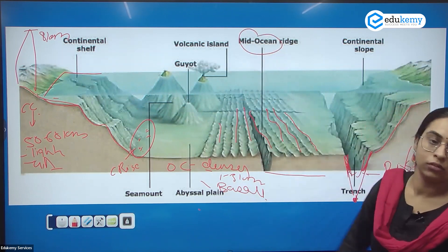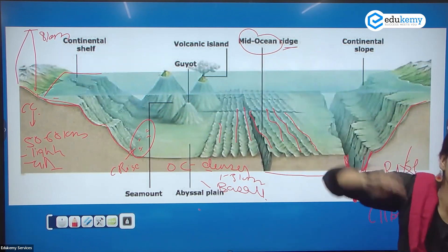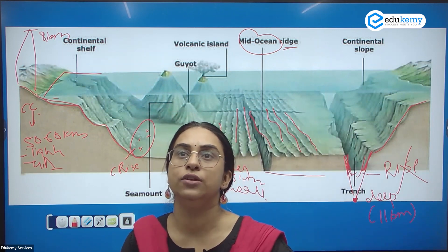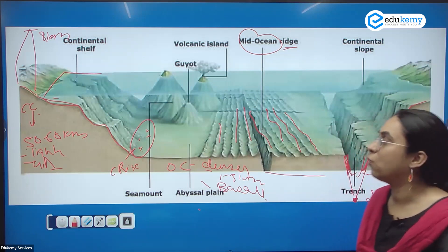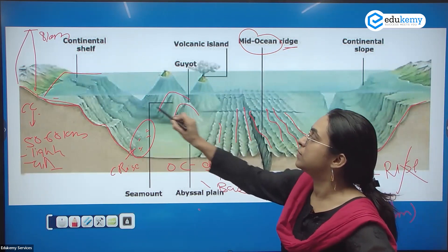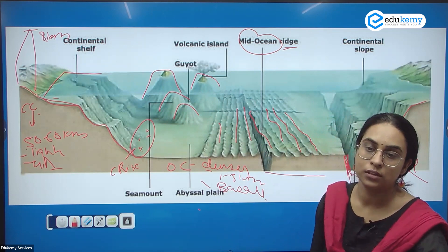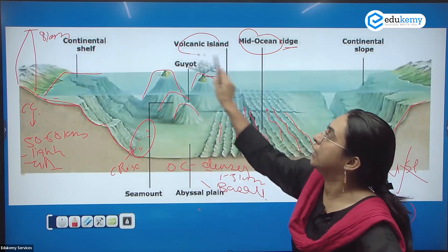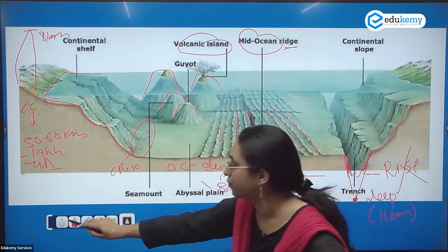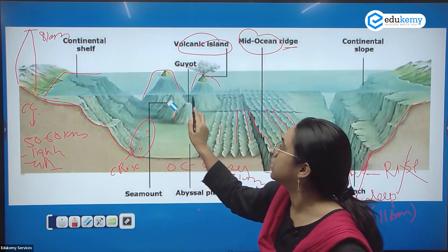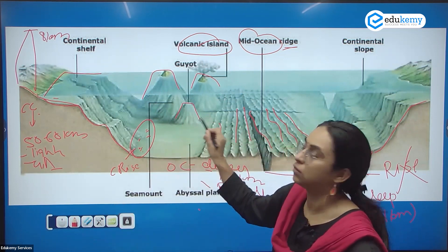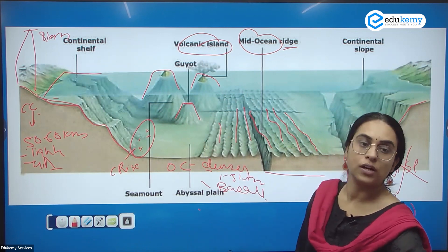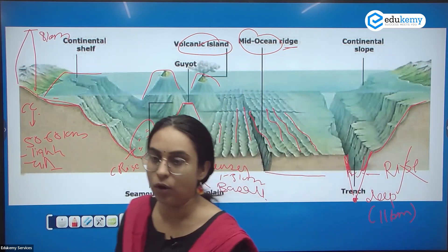Then you have a chain of mountains called the mid-ocean ridge. A ridge is an elevated plateau — any elevated land is called a ridge. Along with that, you have sea mounts, which are underwater mountains. Some of them are volcanic, and some are volcanic islands.